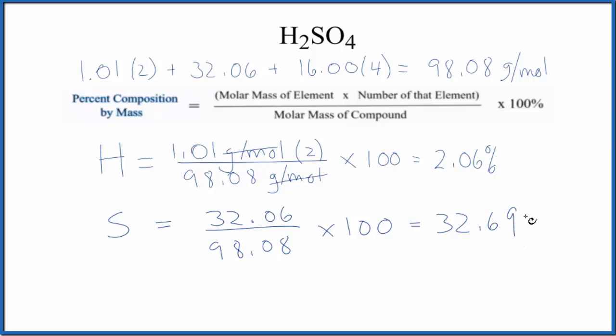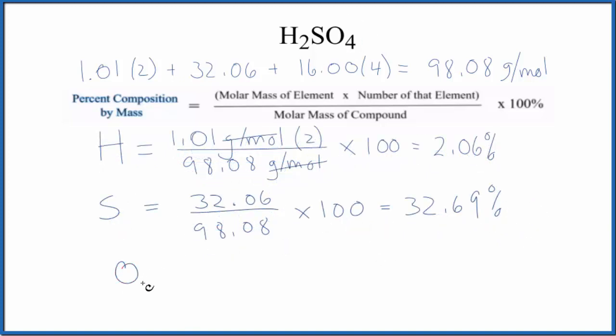and we end up with 32.69%. Let's figure out the oxygen. For oxygen, oxygen is 16.00 grams per mole. We have four oxygen, that's the number of the element, so since we have four, we multiply by 4.